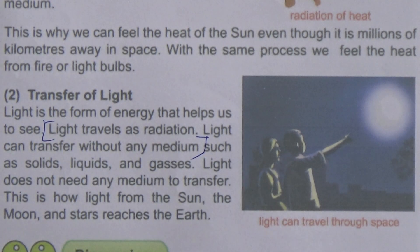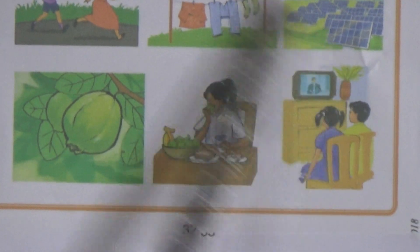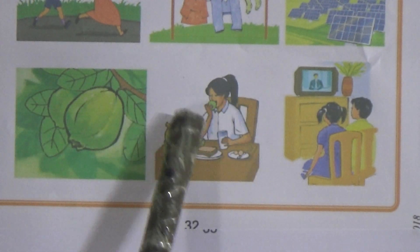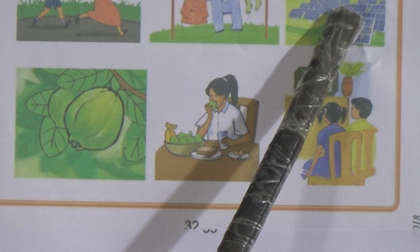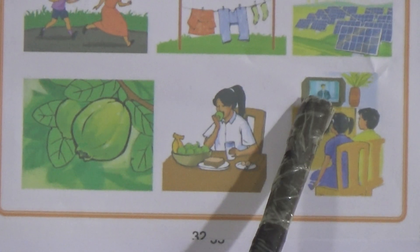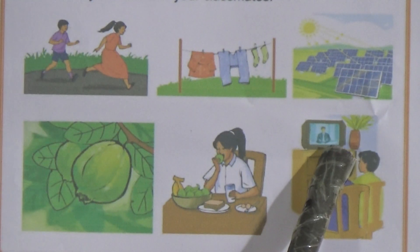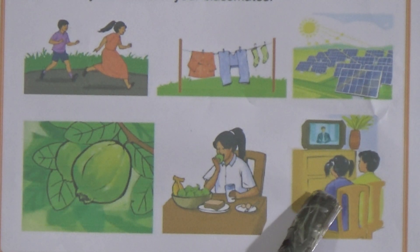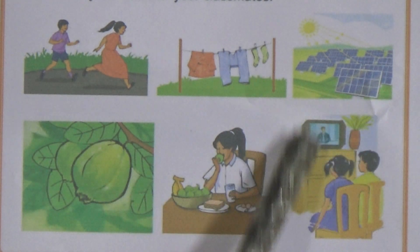For the transformation of energy, follow page 33 of your book. To recap: when we eat food, chemical energy transforms into mechanical energy when we work. The solar panel transforms light energy into electrical energy. When we switch on the television, electrical energy transforms into light, heat, and sound energy. When the windmill moves, mechanical energy transforms into electrical energy.